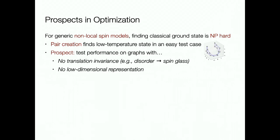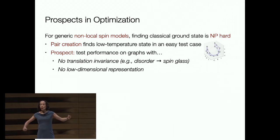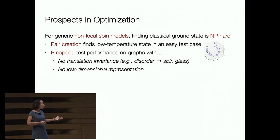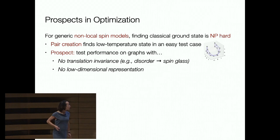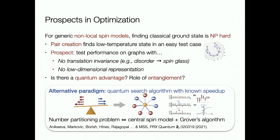It's neat that pair creation dynamics give rise to something resembling low-temperature states, potentially interesting for optimization. On translation-invariant graphs with a 2D picture, finding the XY model ground state isn't hard classically. But with non-local couplings and disorder, this is classically a hard problem, and it would be wonderful to explore whether quantum dynamics offer some advantage—a direction we'd love to investigate in this system. We can't promise a quantum speedup, but there's theory on other systems where one would really expect it.